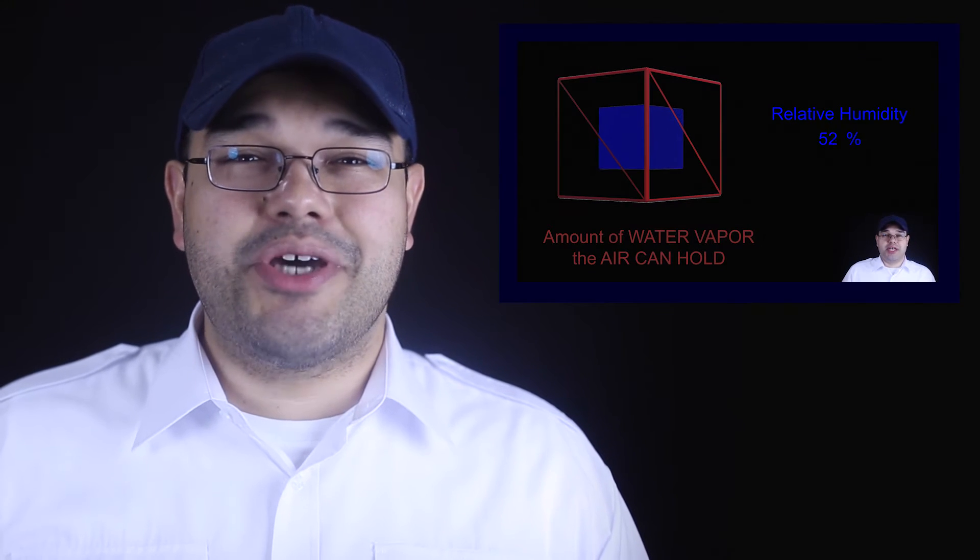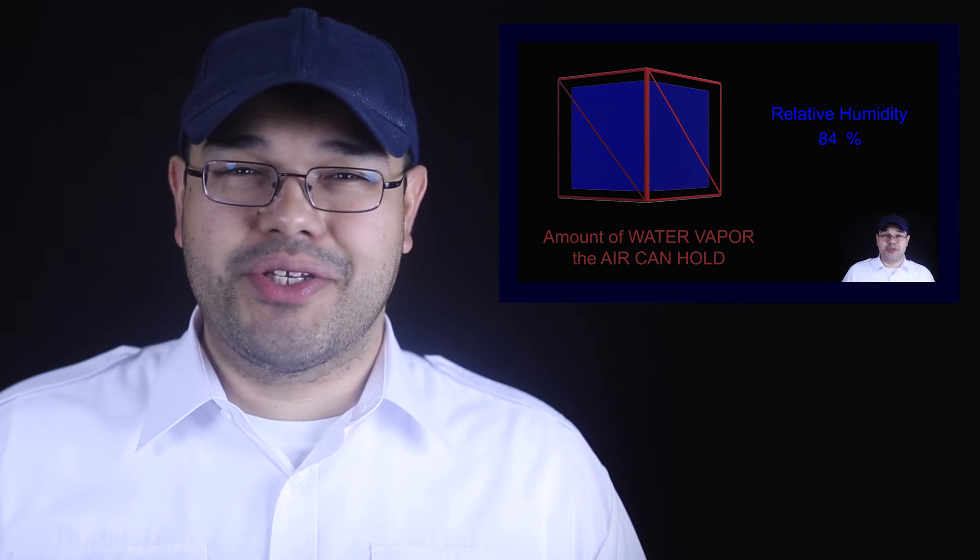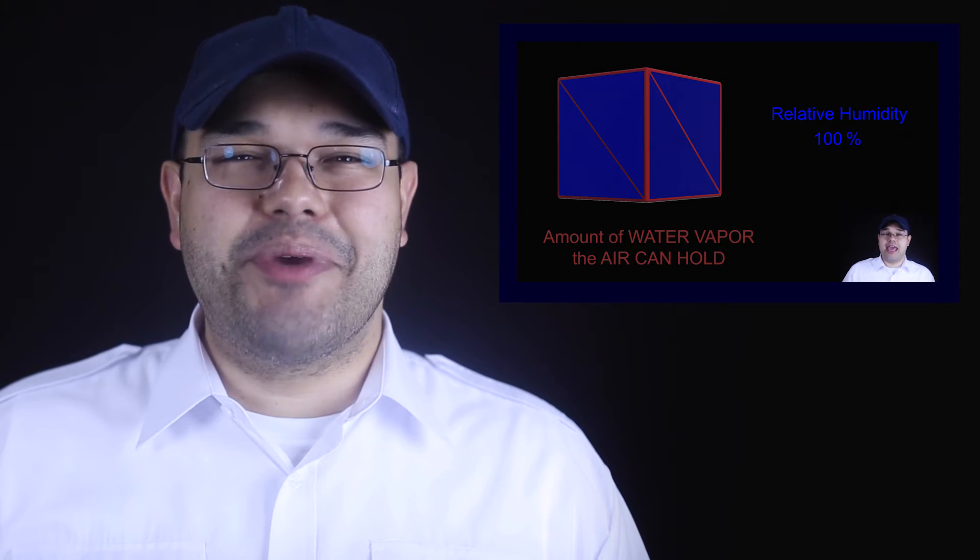Now actually there is a fourth property being relative humidity, but we talked about that in our other video called Why Clouds Form. So be sure to check that out. Okay, so back to the three properties of the atmosphere on a local scale. Let's start with temperature.